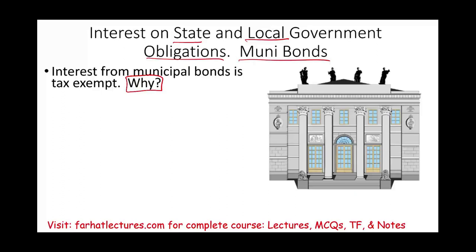There are two things to address. One, why is that interest exempt? Two, we need to understand how to perform the computation. In other words, if I have to compare a municipal bond versus a corporate bond, which one will I choose? They might have different interest rates, and it all depends on my tax bracket, my marginal tax rate. This is what we'll try to compute.